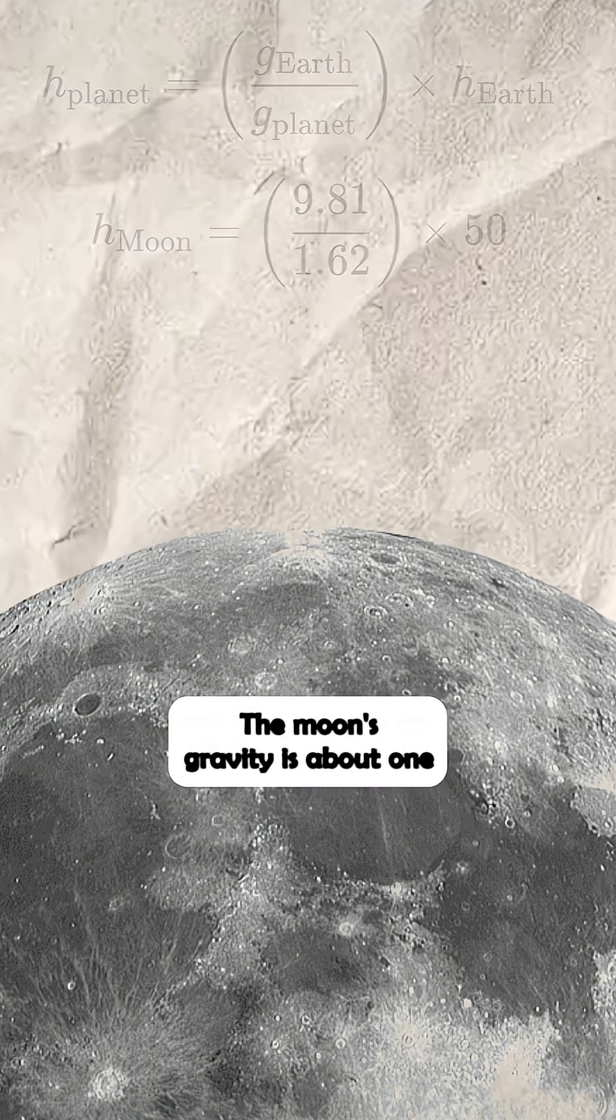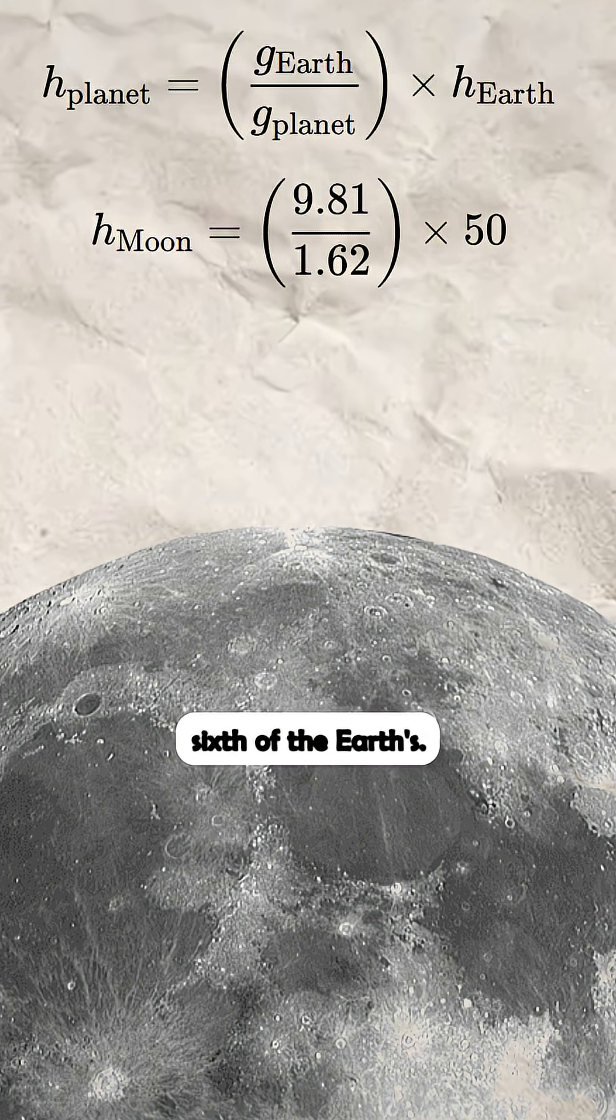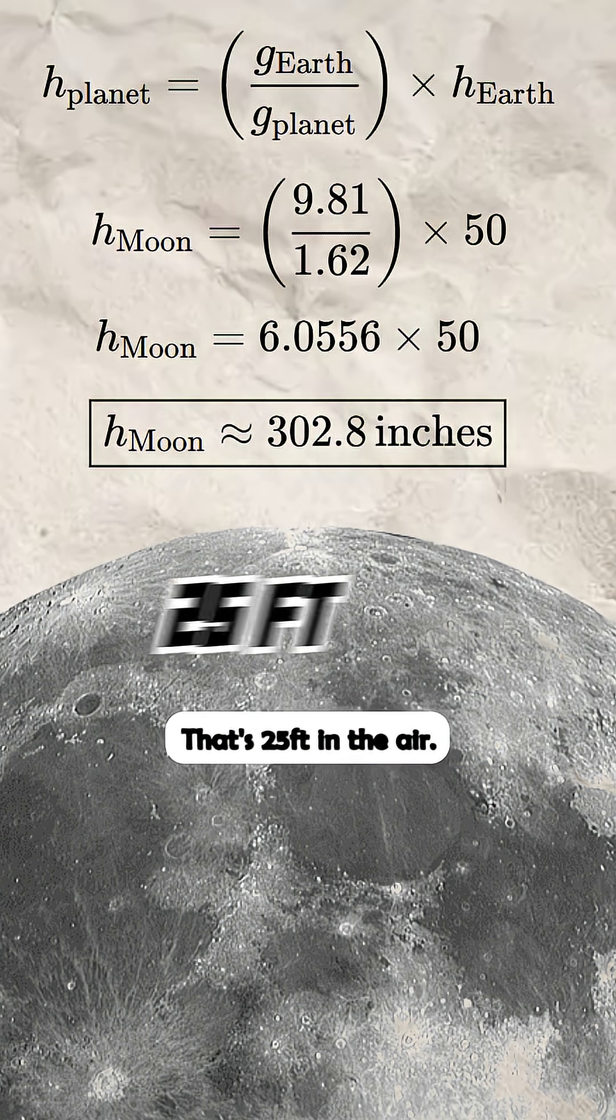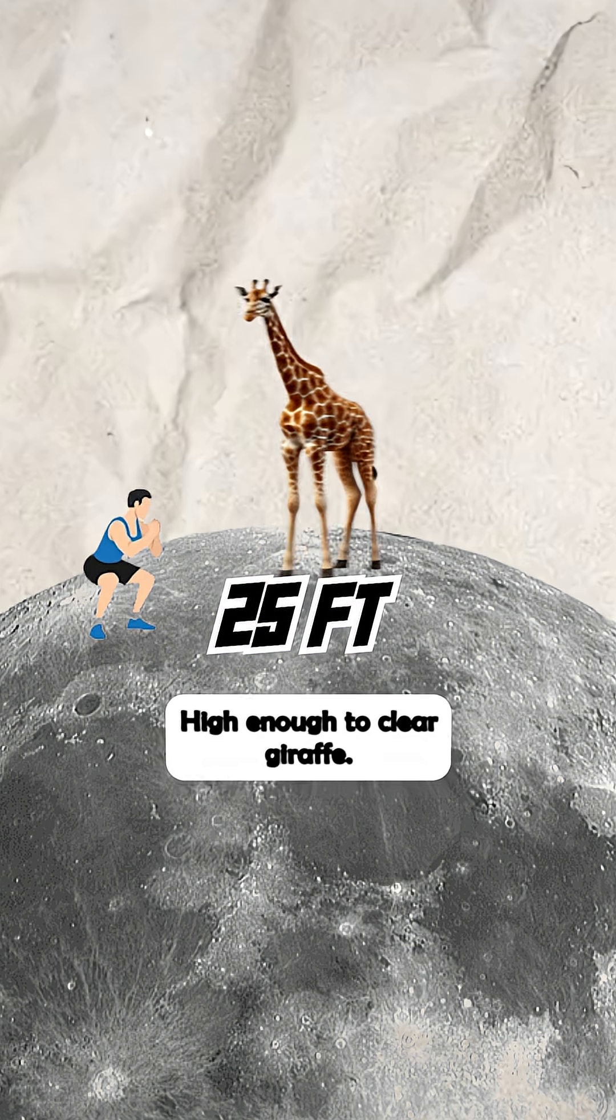First, the Moon. The Moon's gravity is about one-sixth of the Earth's, meaning your 50-inch vertical jump becomes over 300 inches. That's 25 feet in the air, high enough to clear a giraffe.